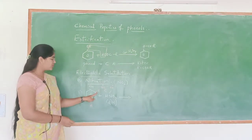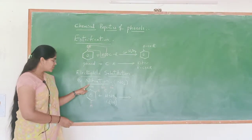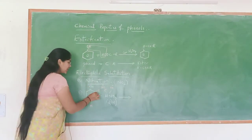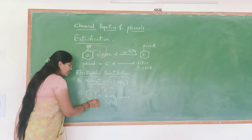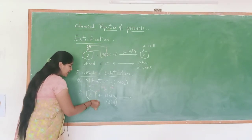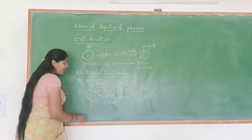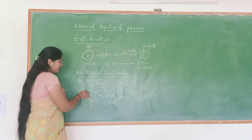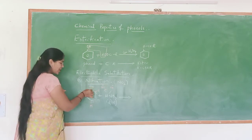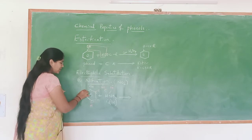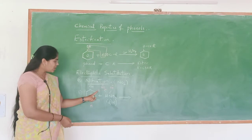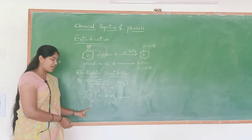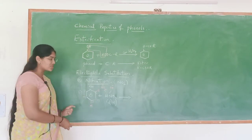So ortho means the adjacent carbon to the functional group carbon is known as ortho carbon. Next to ortho is meta. Next to meta is para. Even the other adjacent carbon to the functional group is also ortho. So we have two ortho positions, one meta, and one para position. At ortho and para positions, hydrogens are present.